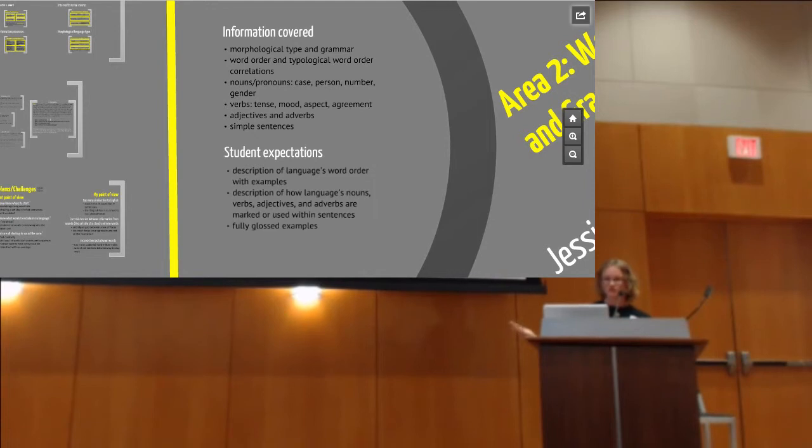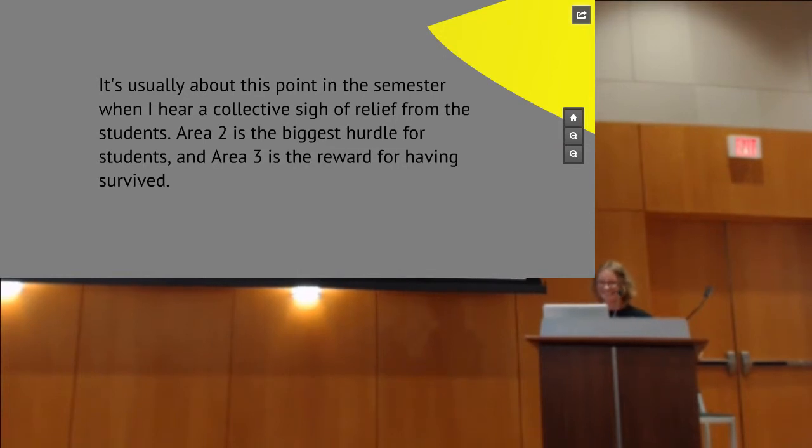After they finish words, by the way, just so you know where we're going with all this information, they do cover morphology, those morphological language types, how that ties in with grammar, word order, typological word order, what are those subject-verb-object or object-verb correlations across language, looking at things like case, mood, ways to use adverbs, putting together simple sentences. And by the end of this sub-area, they have a description of how their language works grammatically. They have written examples, sentences, and they do have to use the Leipzig glossing method.